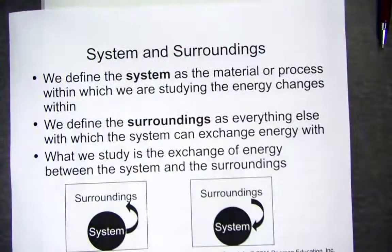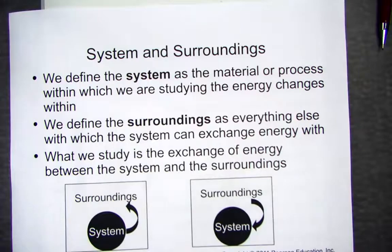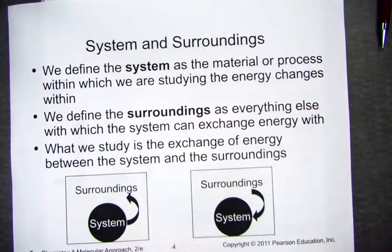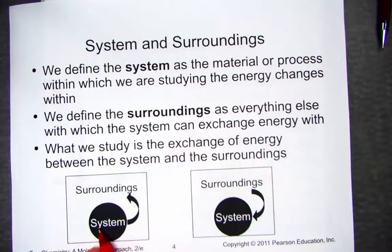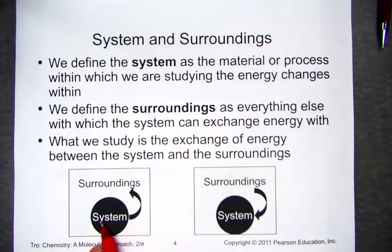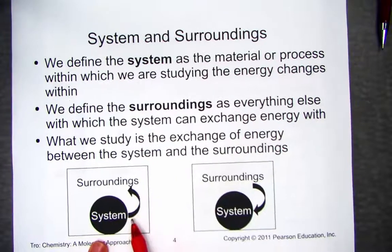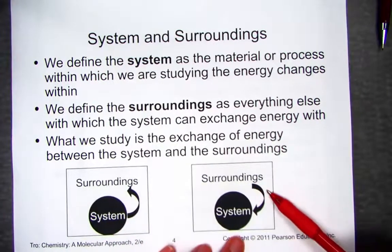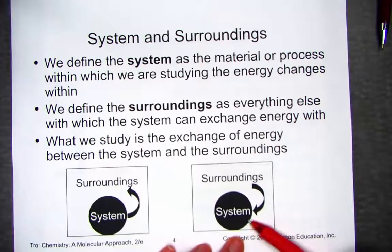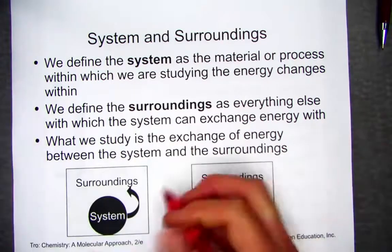Here are some vocabulary terms. As a chemist, we think about the system as that part of the chemical reaction we are studying, and everything around that chemical reaction becomes the surroundings. The system is the bonds that are being broken and the new bonds that are being formed through the course of a chemical reaction. If the system loses energy to the surroundings, that is called exothermic. If the system gains energy from the surroundings, that is called endothermic.